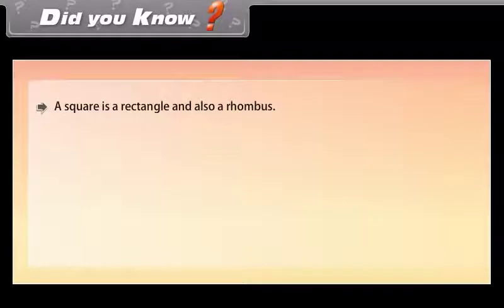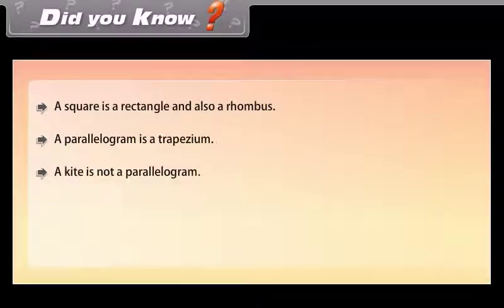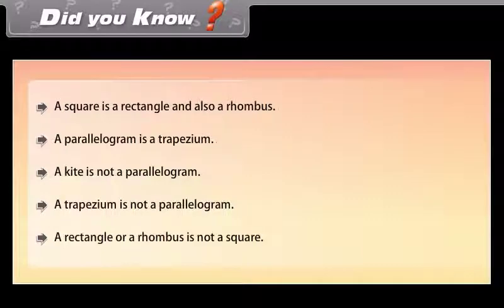Did you know? A square is both a rectangle and a rhombus. A parallelogram is a trapezium. A kite is not a parallelogram. A trapezium is not a parallelogram. A rectangle or a rhombus is not necessarily a square.